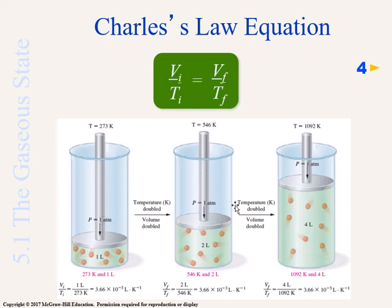When you heat the container, the last one has the highest temperature. The gas molecules start to move out and now the volume goes up to 4 liters. Now, if you divide the volume, new volume, 4 liters over the temperature, 1092 Kelvin, we get a value of 3.66 times 10 to the negative 3 liter inverse Kelvin.